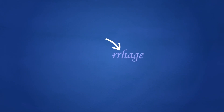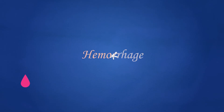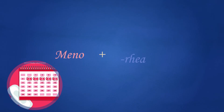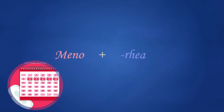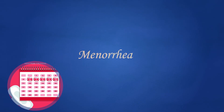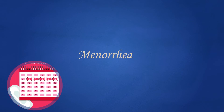When you add a suffix beginning with rh to a root, the r is doubled. For example, hemo, which means blood, plus rhage, which means bursting forth, makes hemorrhage, which means a bursting forth of blood. And meno, which means menses, plus rrhea, which means flow or discharge, makes menorrhea, which means menstrual flow.